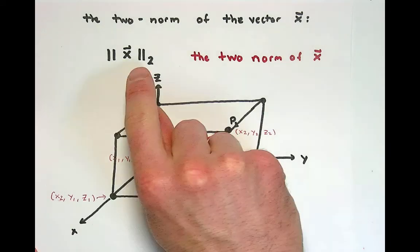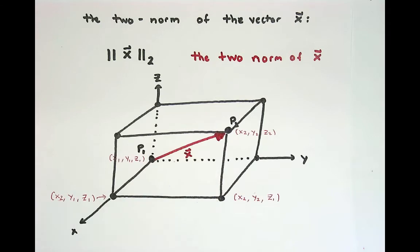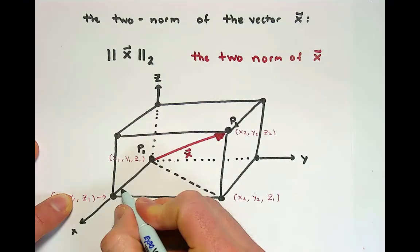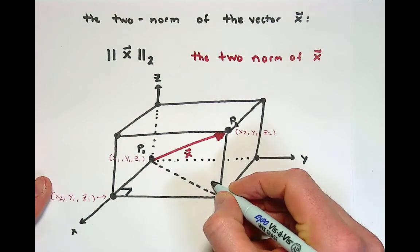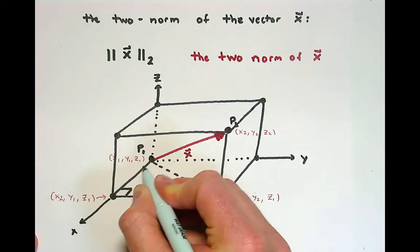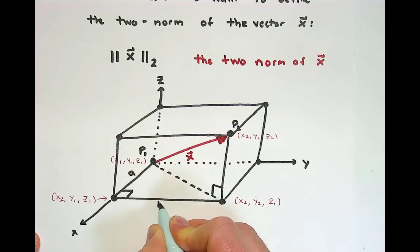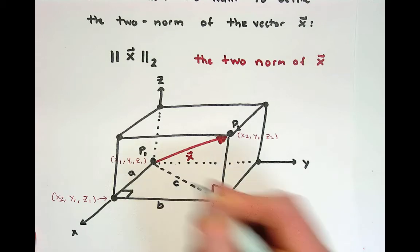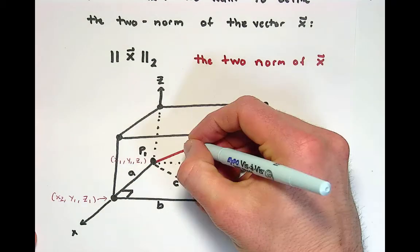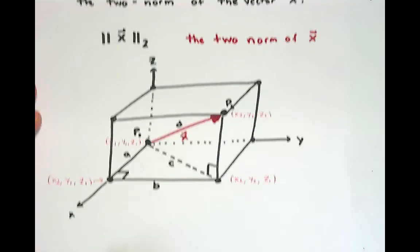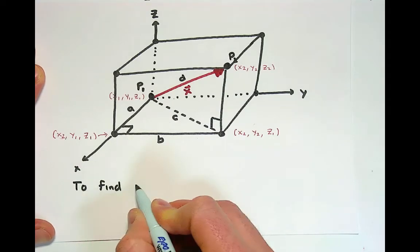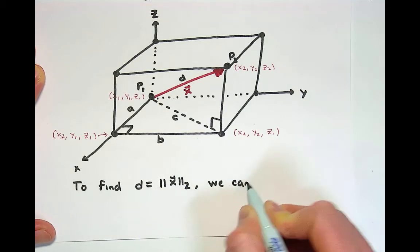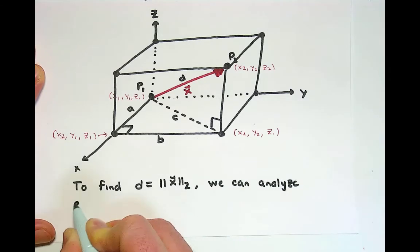What we see is we want to define the 2-norm as the length of x. To do this, I want to highlight that there are actually two right triangles here. We have one right triangle in the base plane and another right triangle along the diagonal of the box. We'll call the length of one leg A, the other leg B, the diagonal along the xy plane C, and D will be the 2-norm of x.